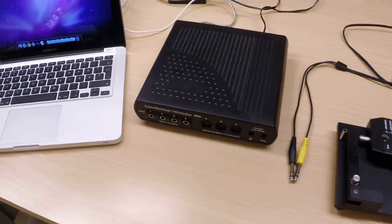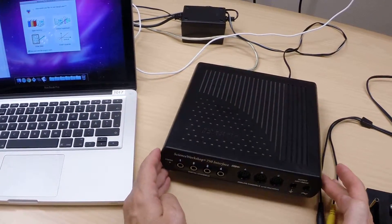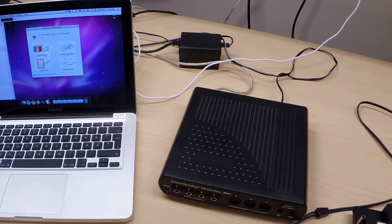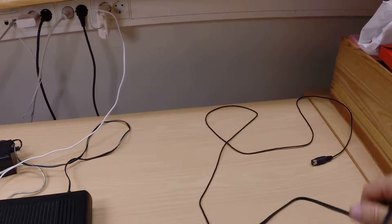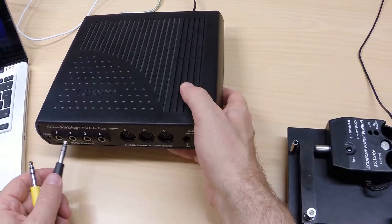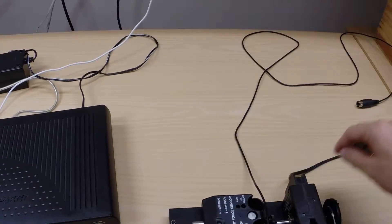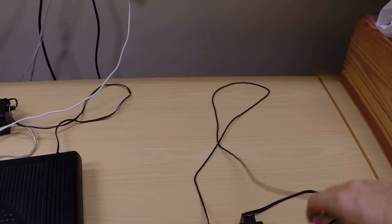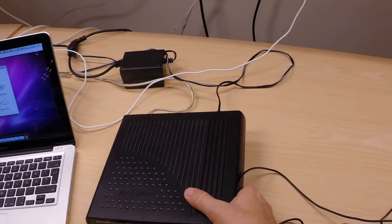It will use the Science Workshop 750 interface which needs to be on. We will connect the rotary motion sensor, which is this one, to the digital input, and the force sensor to an analog input.